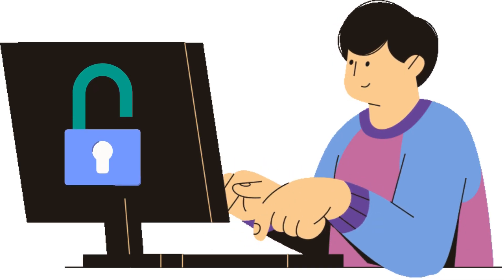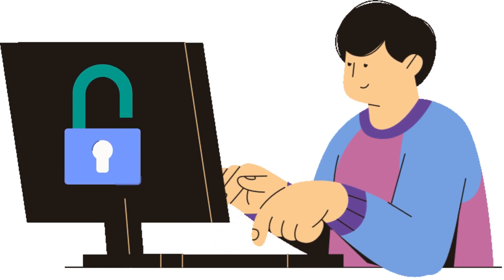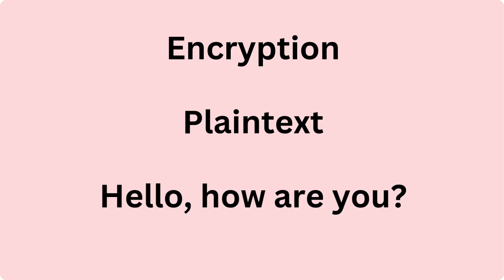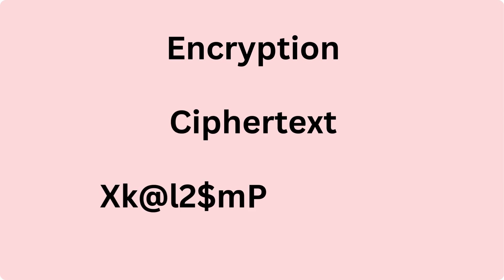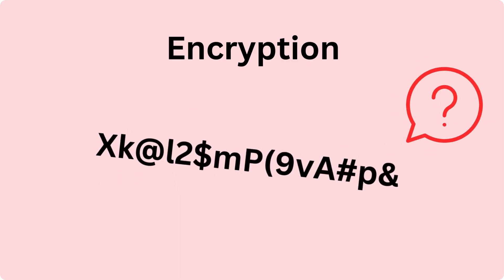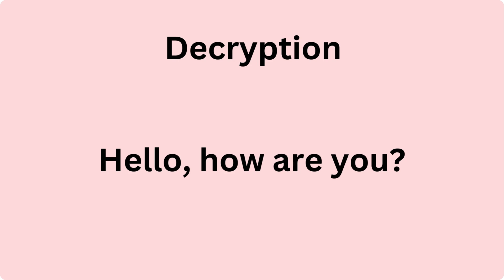Example 3 — real-world computer encryption. Message before encryption (plain text): 'Hello. How are you?' After encryption, the ciphertext looks like: XK@L2$MP9#hashPAND — random characters that no one can understand. After decryption, it returns to plain text: 'Hello. How are you?'